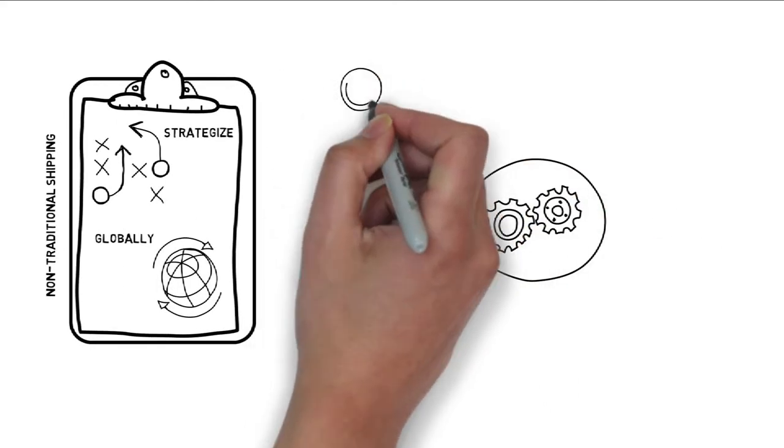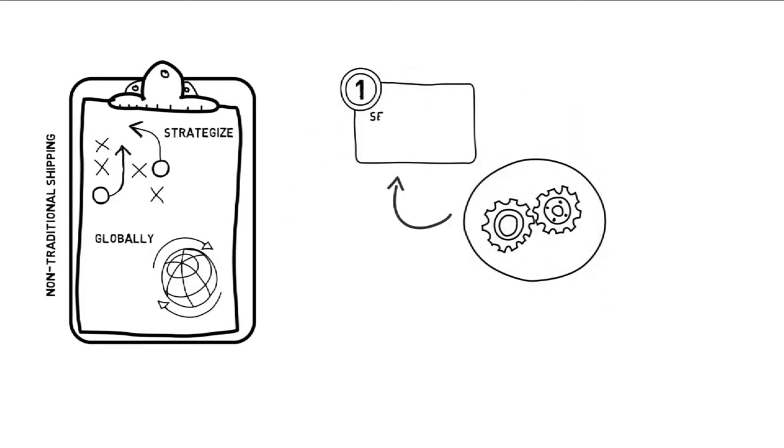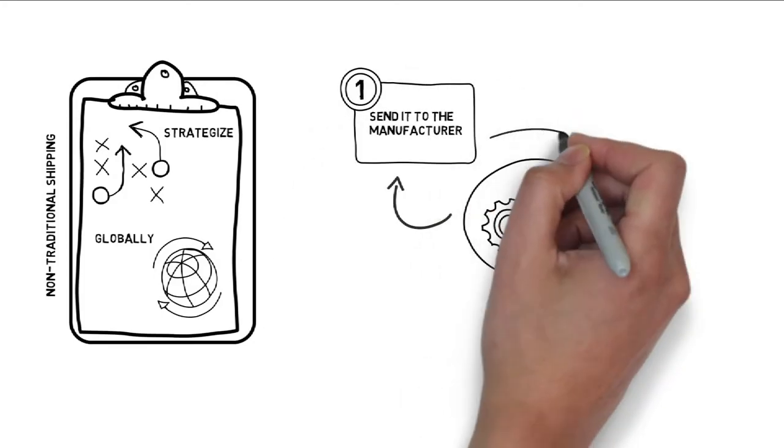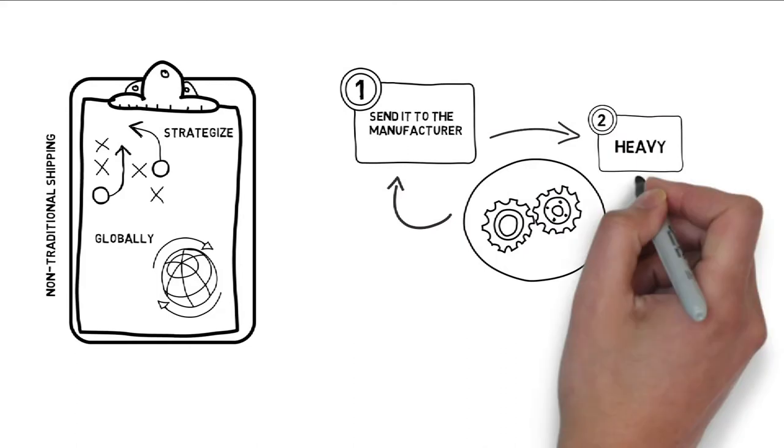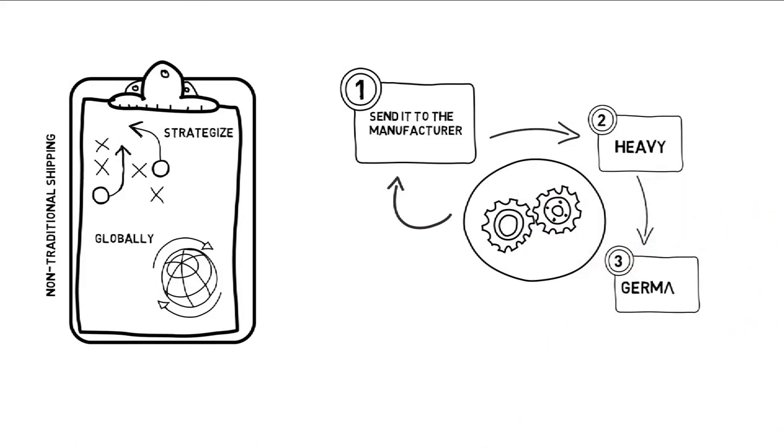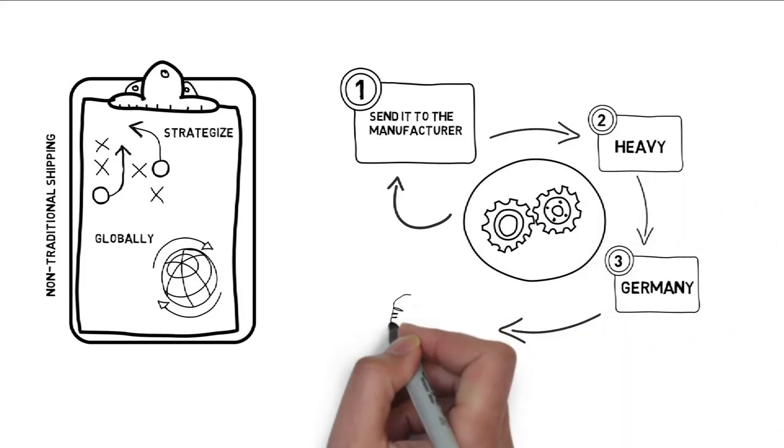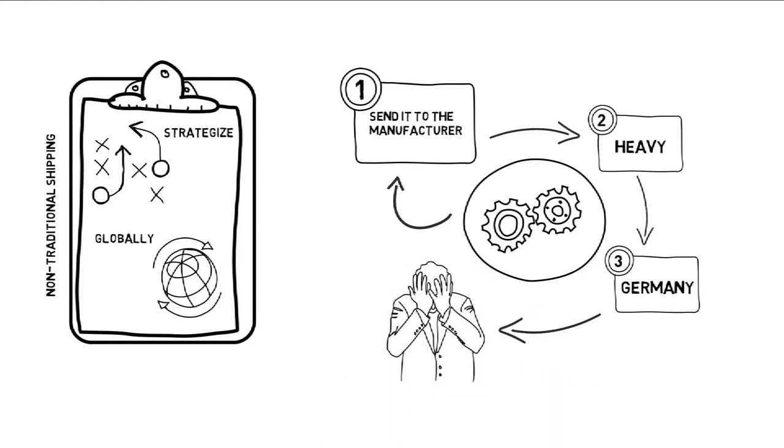A piece of machinery breaks on your production floor. The only way you can fix it is to ship it back to the manufacturer. The only problem is this thing's heavy, it's cumbersome, and the manufacturer is located in Germany. This should not be your problem to figure out, but today it is.